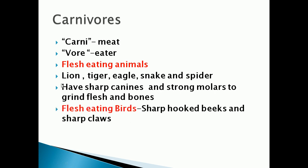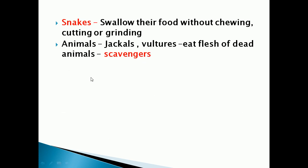Flesh-eating bats also come under carnivorous. Flesh-eating bats have sharp hooked beaks and sharp claws by which they eat the flesh of animals. Some carnivorous animals such as snakes swallow their food without chewing, cutting, or grinding — they just swallow the food. Animals like jackals and vultures are also carnivorous and eat the flesh of dead animals.